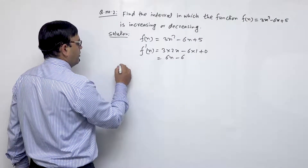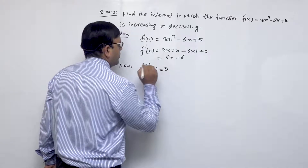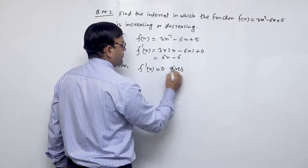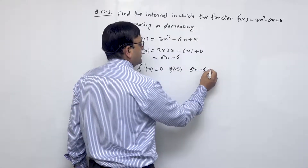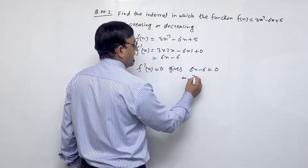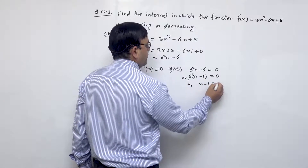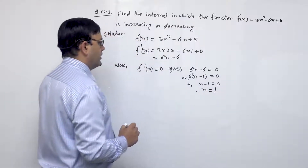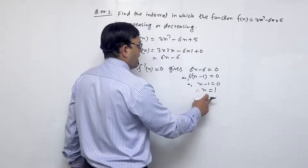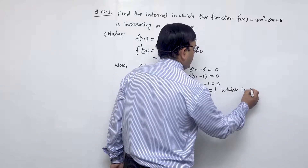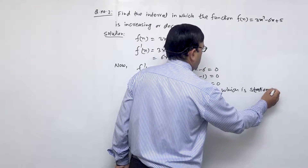Now we know f'(x) = 0 gives us 6x - 6 = 0. Taking 6 as common, x - 1 = 0, therefore x = 1. So if the first derivative is equal to 0, then x = 1, which is the stationary point.